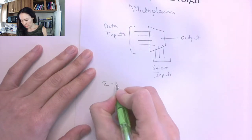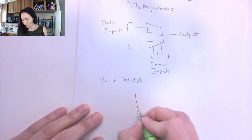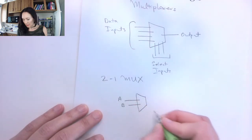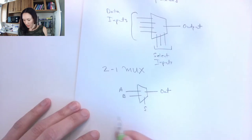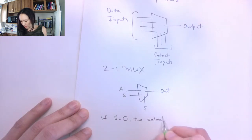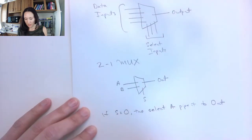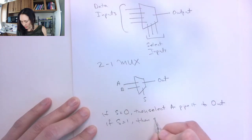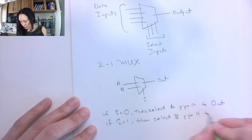The most simple multiplexer is a 2-to-1 multiplexer. The abbreviation for multiplexer is mux, and it looks like this. The 2-to-1 multiplexer has two data inputs — I'll call them a and b — and it has one select line input, s, and then here is the output. The way it works is: if s is equal to 0, the multiplexer will select a and pipe it to the output. Conversely, if s is equal to 1, the multiplexer will select whatever is coming in on input b and pipe it to the output.